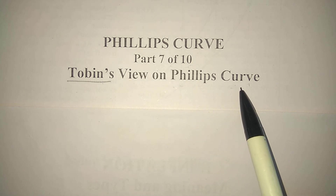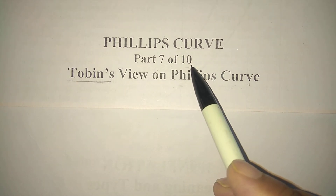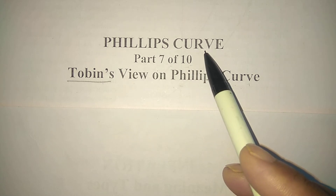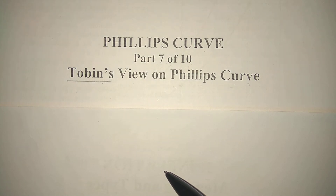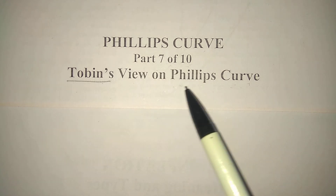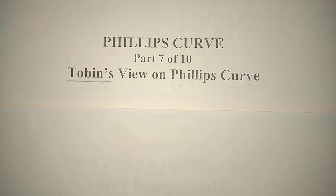In this video we will discuss Tobin's view on the Phillips curve. This is Part 7 of 10 videos on the Phillips curve. The first video is an introduction, the second part covers inflation and unemployment, parts 3, 4, and 5 cover the long-run Phillips curve and Friedman's theory of the natural rate of unemployment, Part 6 covers policy implications, this is Part 7 on Tobin's view, Part 8 is Solow's view, Part 9 is rational expectations, and Part 10 is the conclusion.